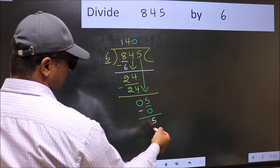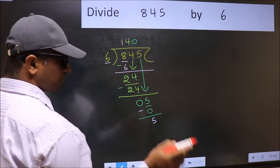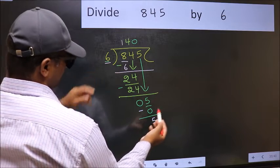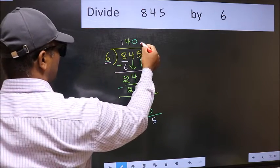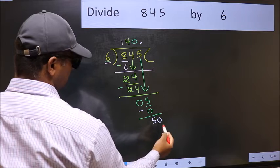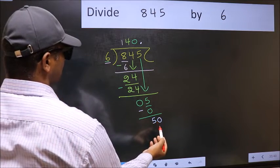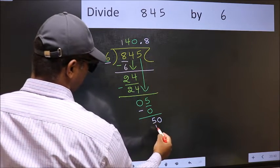Over here, we did not bring any number down, and 5 is smaller than 6. So now you can put dot and take 0. So 50. A number close to 50 in 6 table is 6, 8, 48.